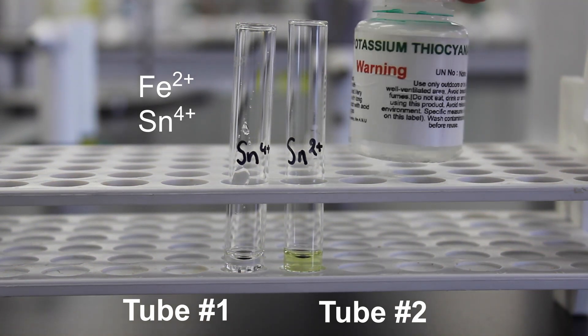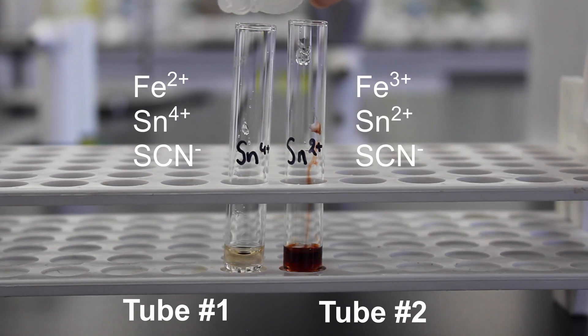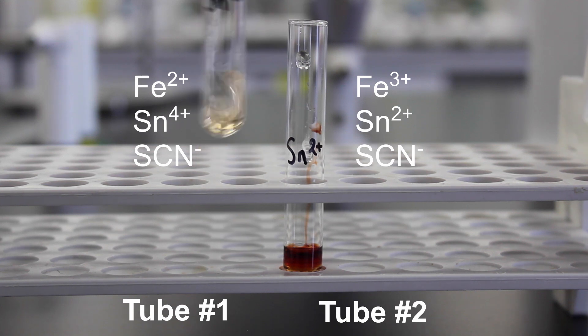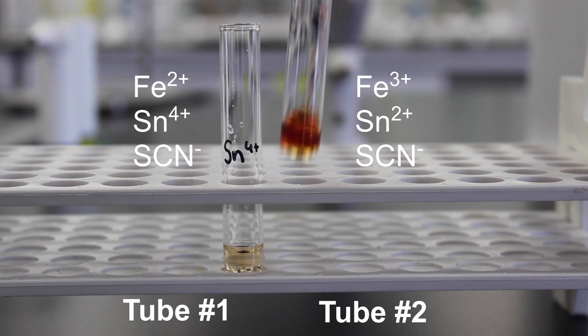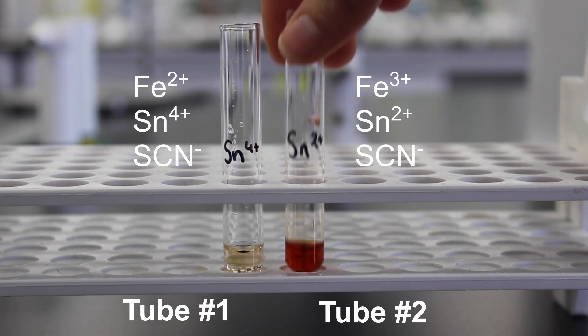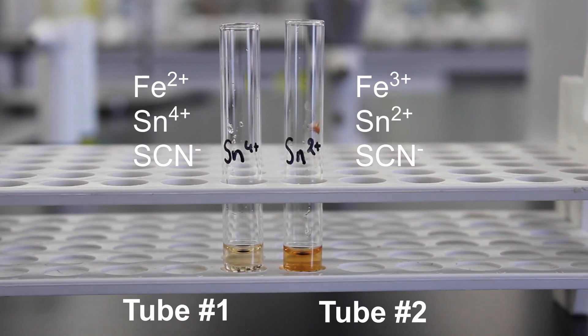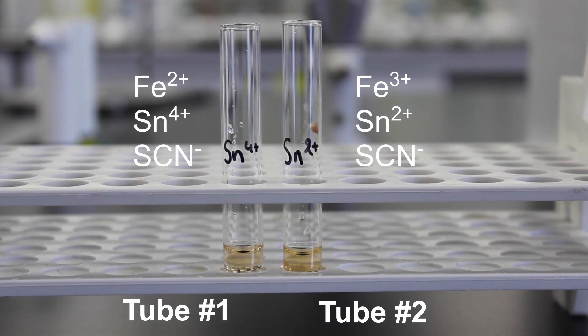We will again be using thiocyanate ions as an indicator for these reactions. Make sure your tin is added in excess. This is so we can ensure all iron 3+ ions that might be reacting with the tin get reduced. After a minute or so, it should be evident whether a reaction has taken place.